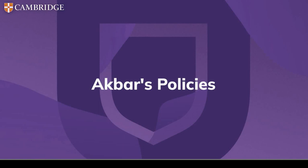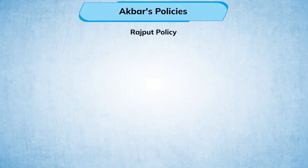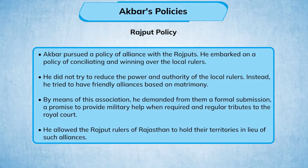Akbar's Rajput policy: Akbar pursued a policy of alliance with the Rajputs. He embarked on a policy of conciliating and winning over the local rulers. He did not try to reduce the power or authority of the local rulers; instead he tried to have friendly alliances based on matrimony.